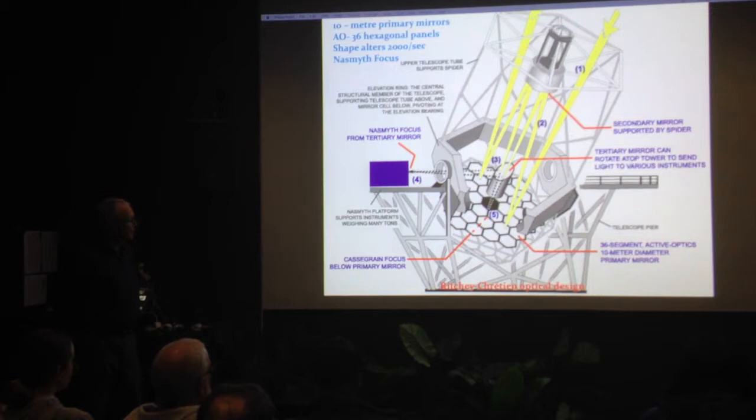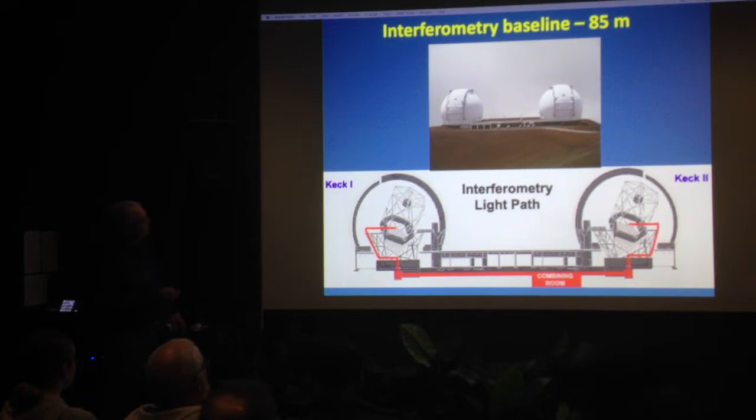That one called a coude focus - coude is French for elbow - where the lights get shuttered up to the side, back down, sort of like an elbow. The light gets bent and doubled down. Once again, it's all about handling these huge bits of weights off all the big sensors and spectroscopes and stuff. So that's how we've looked at Nasmyth focuses. That's the Keck telescopes, what they look like. Of course, it's a handy place to put your eyepiece there if you want to look through it.